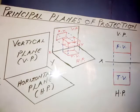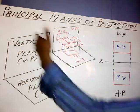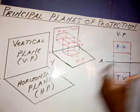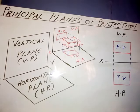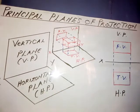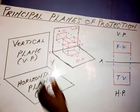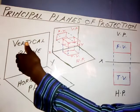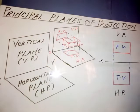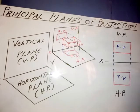What we mean by that is that we have something like this as you can see here. So we have two principal planes of projection that we use in technical drawing, though we have other planes. Here is a vertical plane and here is a horizontal plane.